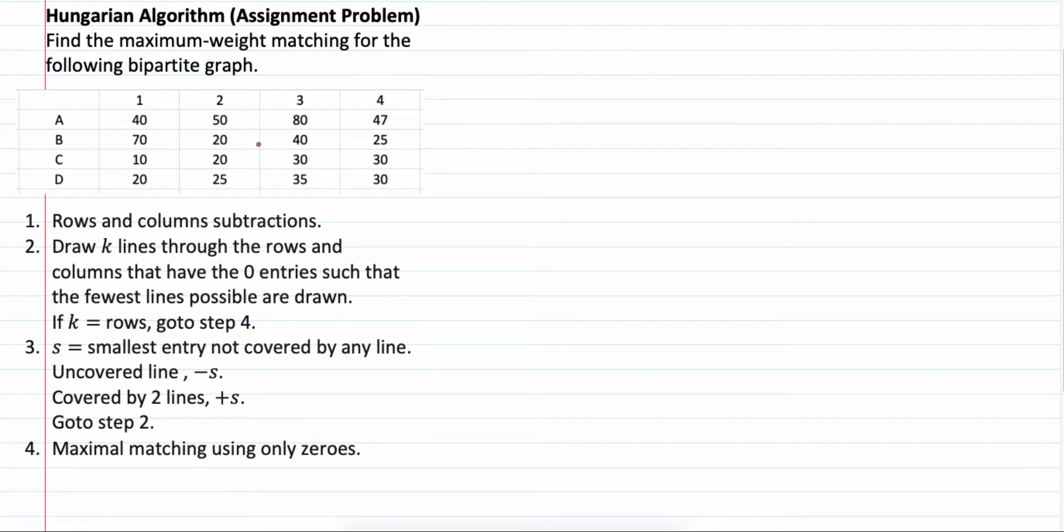2, 3, 4. For every assignment, for example, if we want to assign A to task 2, the cost is 50. If we want to assign A to task 4, the cost is 47. For example, if we want to assign C to task 1, the cost is 10. If we want to assign C to task 2, the cost is 20.